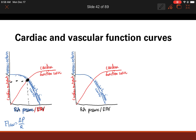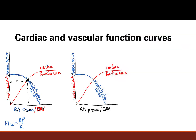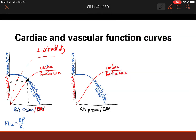Now let's look at how these curves shift. Increases in contractility — positive inotrope — will shift the cardiac function curve up. With a new, higher cardiac function curve, we look at the new intersection with the venous return curve. We see that cardiac output has increased and right atrial pressure or end-diastolic volume has decreased. That is the new steady state.